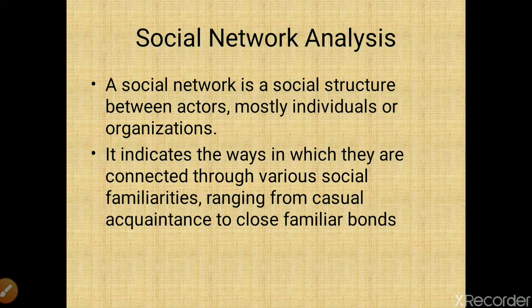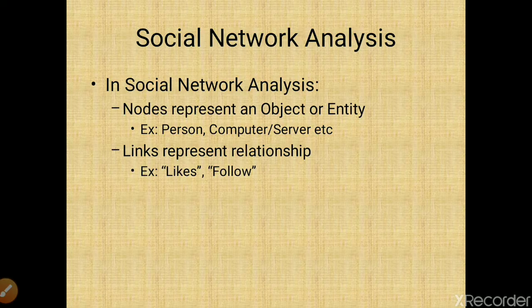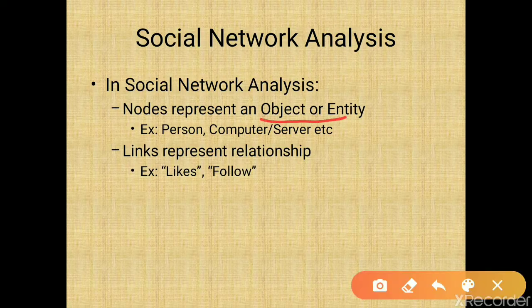Social network analysis examines how social structures of individuals are related based on a common relation of interest, like friendship. Using graph theory, we consider the network as a graph with nodes and edges. Nodes represent an object or entity — in a social network, persons; in a computer network, computers and servers. Other entities like power generators or airports can also be represented as nodes, while links represent relationships like 'likes' and 'follows'.